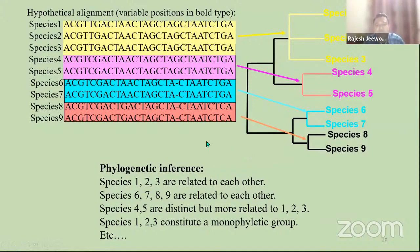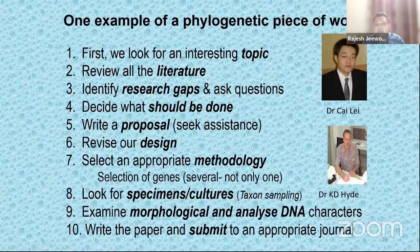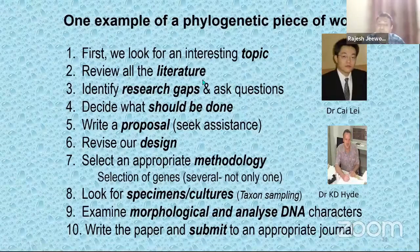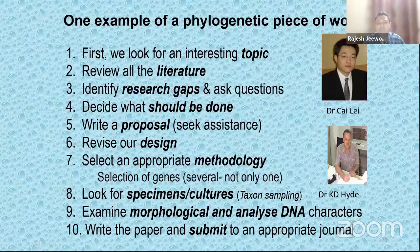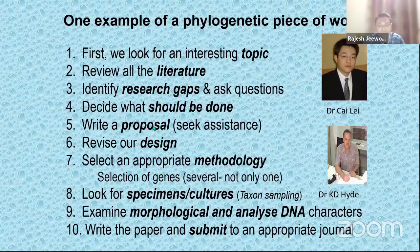An example of a phylogenetic piece of work: if you want to do phylogenetic work and include DNA in your study, what you need to do is look for an interesting topic, try to review all the updated literature, try to identify what the gaps are and what is missing. Is there a problem with morphology? Or do you want to investigate how those microbes have evolved or how diverse they are? Decide on what needs to be done, write a proposal, talk to your supervisor, and then redesign your phylogenetic study.